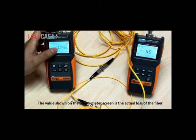The value shown on the power meter screen is the actual loss of the fiber.